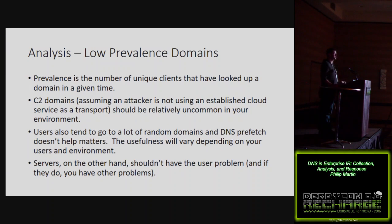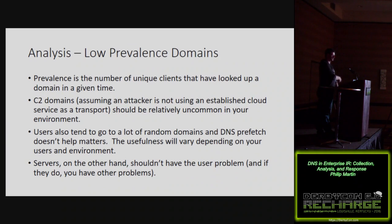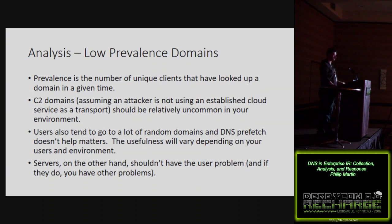Where you can apply low prevalence analysis much more effectively is on servers. Servers generally don't have the same drift as client endpoints, at least if they're well managed. A very interesting approach is to do prevalence analysis and ask: what are the least-queried domains in my environment and why? You can layer this with age-based analysis — least common new domains. I don't recommend this for client environments; you'll be chasing that tail for the rest of your life.